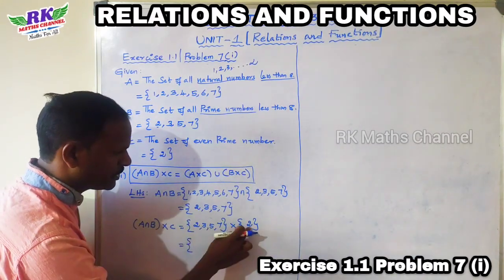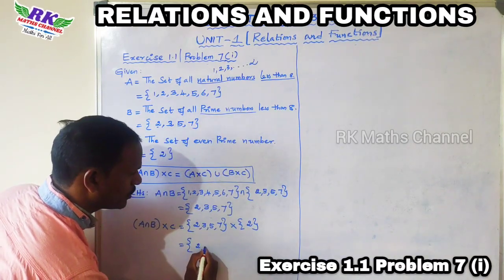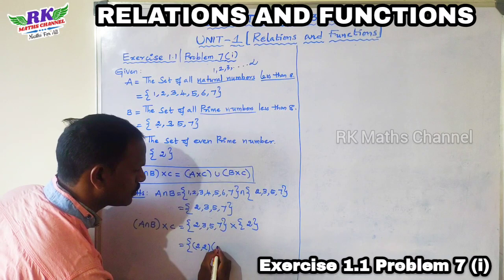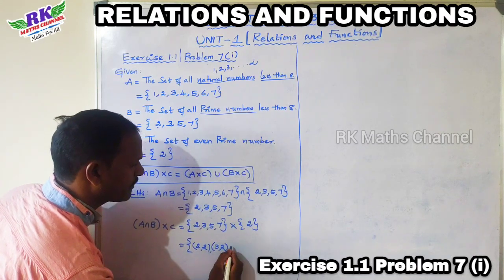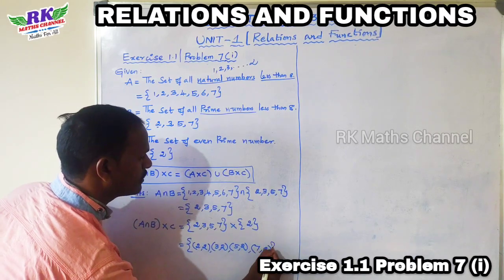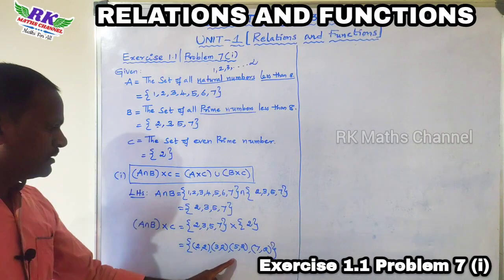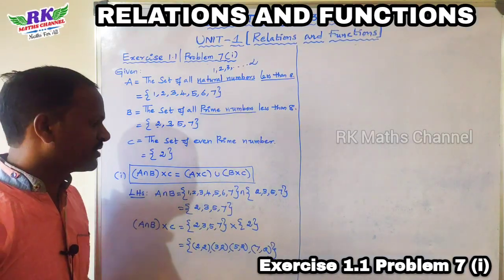Now (A∩B) cross C. Since C is {2}, we get ordered pairs: (2,2), (3,2), (5,2), (7,2). That's the answer for LHS. This is equation 1.